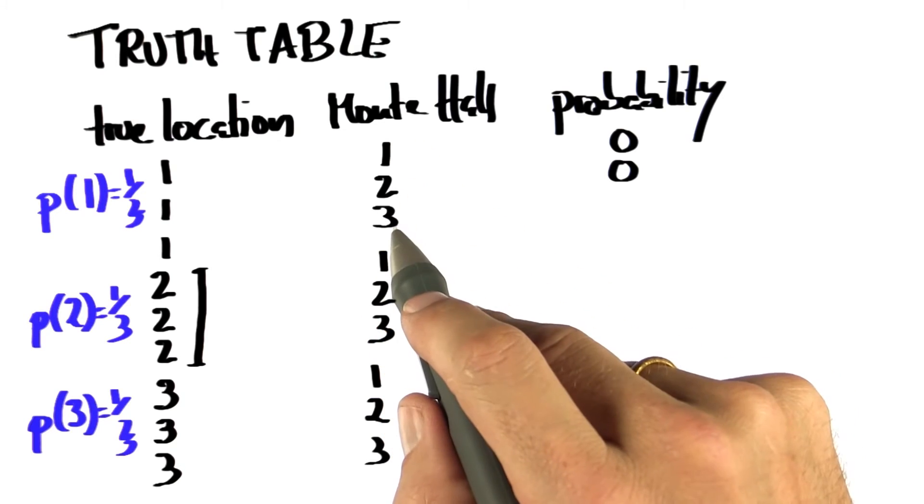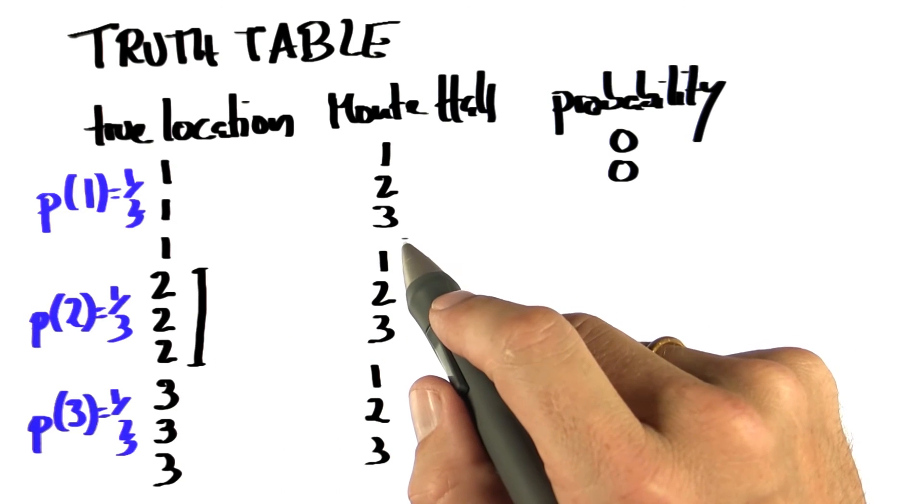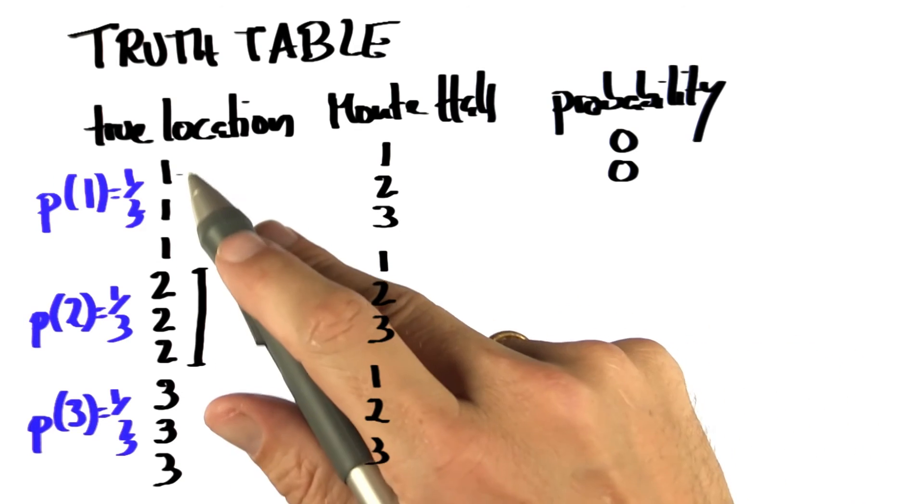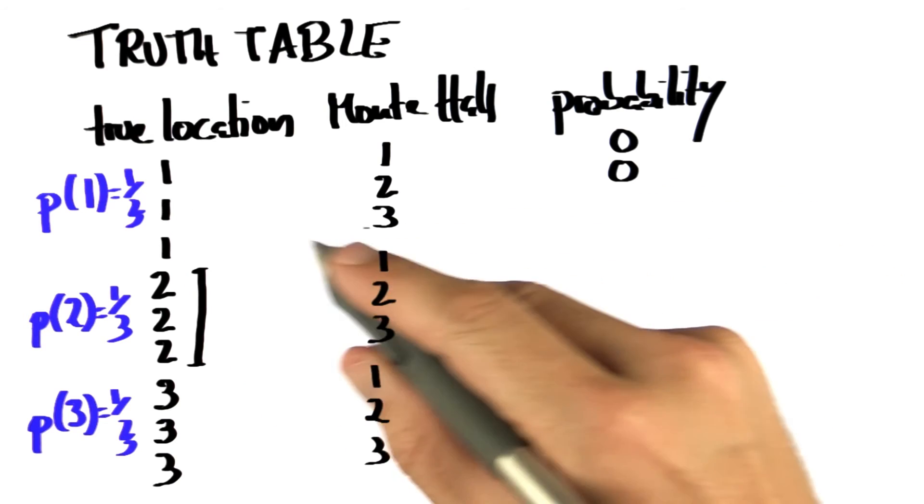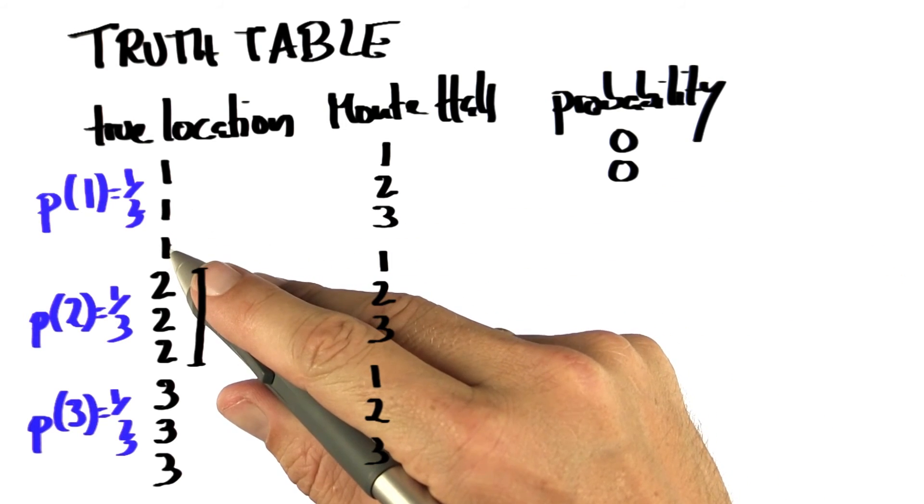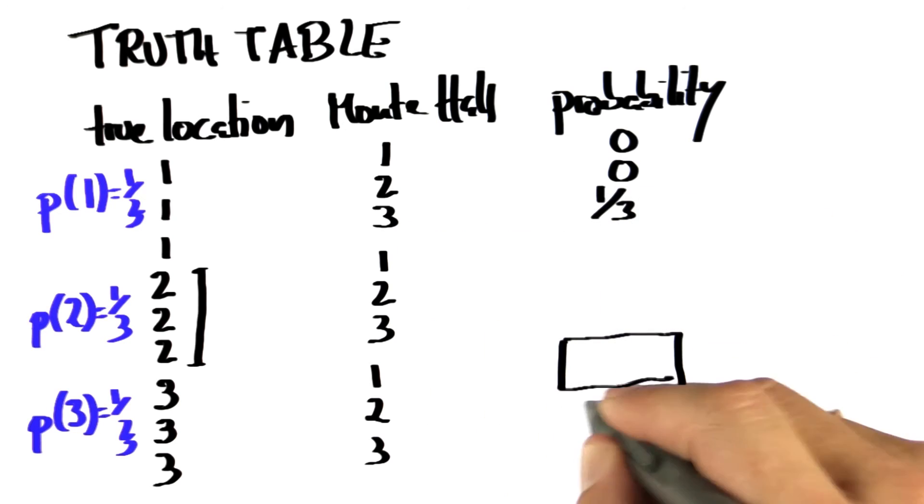It's not the true one. It's not the one I guessed. It's the only empty one that remains. So the probability of showing three given that the true location is one, it's certain. But the true location is one only with a third chance. So this specific outcome that the true location is one and Monty Hall shows me three has exactly a third of a chance.